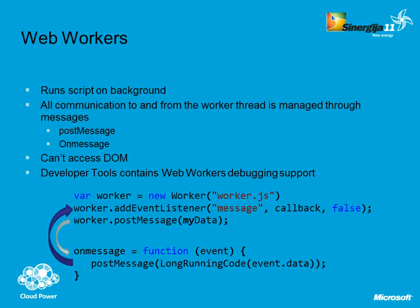If you block the UI thread, the application stops responding to the user. So if you're calculating something really big inside the UI thread, the application becomes unresponsive. If you want to run something on another thread in the worker, you must put everything into a separate file. Then you create a new worker object from some file, start the thread, send a message to the thread — the thread runs — and when the thread is ending, it sends the message back to your UI thread. Inside the web worker, you can run another thread, and so on.